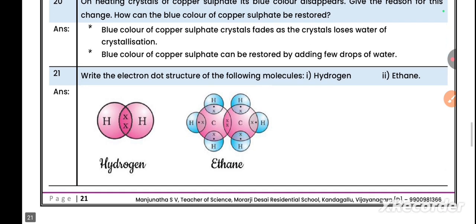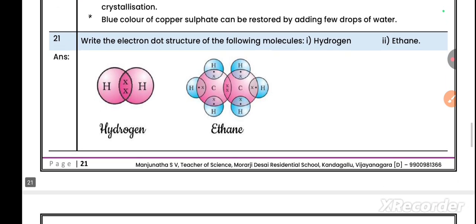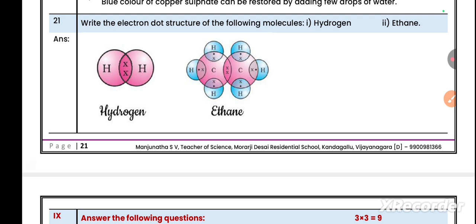Question number 21: Write the electron dot structure of the following molecules. Hydrogen (H2): In their outermost orbit they contain only one electron to share. Hydrogen reacts with hydrogen to form H2. They share two electrons. Ethane (C2H6): In between carbons they share two electrons, and hydrogen shares one electron with the carbons. By sharing electrons, covalent bond is formed between carbon and hydrogen. This dot structure is also important for two marks in your exam.